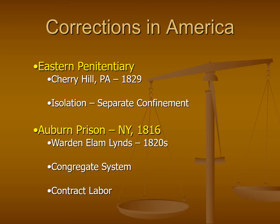The two earliest penitentiaries — the classic models of the penitentiary — were Eastern Penitentiary in Cherry Hill, Pennsylvania, just outside of Philadelphia, and Auburn Prison in New York. We're going to spend time looking at what made these two facilities unique, and what was the backbone that has stuck with us today as far as our approach to incarceration and punishment. We see a lot of the ideas put forth in the early 1800s are still part of our correctional system today.